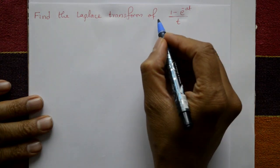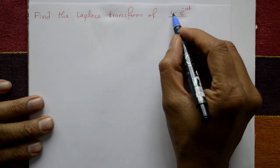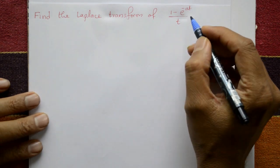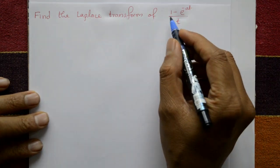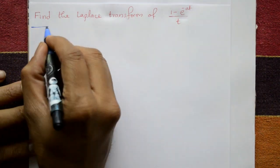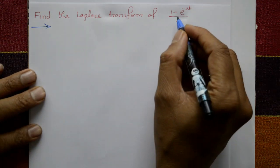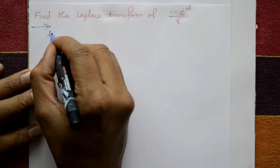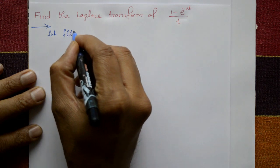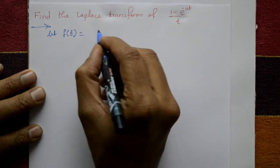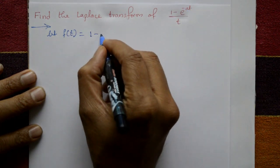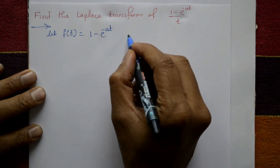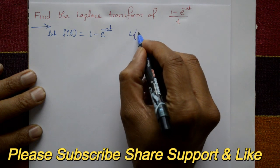Find the Laplace transform of (1 minus e to the power minus at) divided by t. For the solution, take only the numerator part and let f of t equal to 1 minus e raised to minus at.